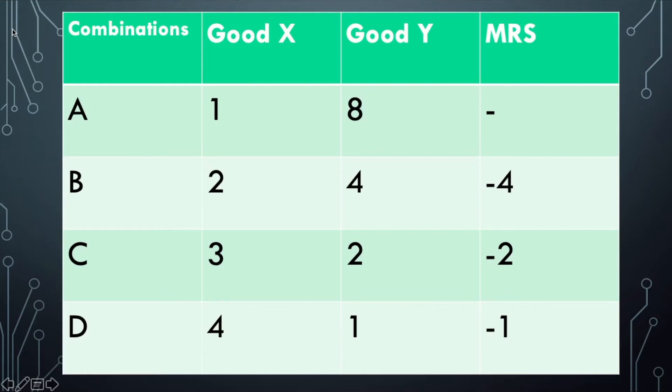The MRS or the marginal rate of substitution can help determine the same. When we bring MRS into the picture, we can see that at combination B, the MRS will be the ratio of